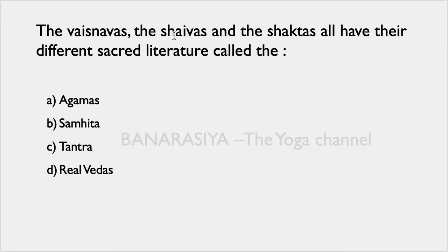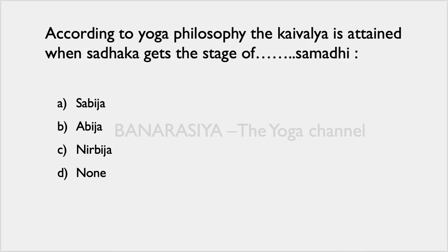Question number two: The Vaishnavas, the Shaivas, and the Shaktas — their different sacred literature is called what? The options are Agama, Sameta, Tantra, or the Vedas. As you all know, Vaishnava, Shaiva, and Shaktas are related to Shiva bhakti or progeny of Shiva, so the correct answer is Tantra.